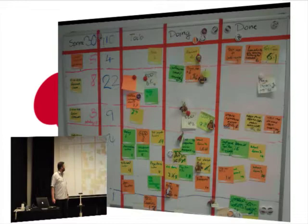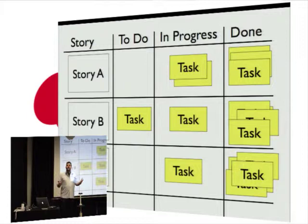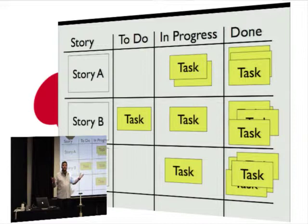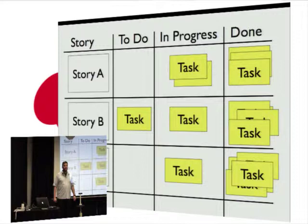Some people use electronic tools to maintain the task board, usually if they've got distributed teams. But most Scrum people will tell you it's best to use stickies because the team physically gets to move stuff — it's more engaging and always visible. You can use index cards and magnets; stickies are the standard. In my team we use magnetic stickies, which are really cool — you can wipe them clean and reuse them.